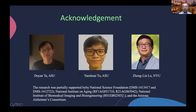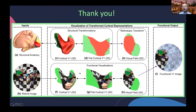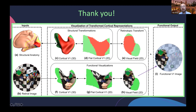This final picture explains the mapping: what we see on the retina image can be reconstructed based on the functional output. Thank you very much, and sorry for the technical trouble.